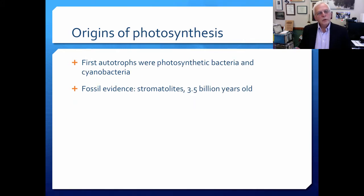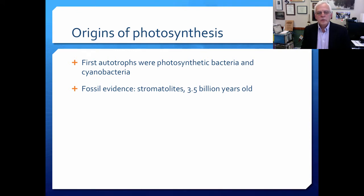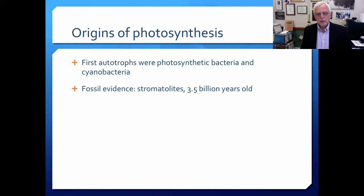Photosynthesis probably began to originate, and the first autotrophs were photosynthetic bacteria and cyanobacteria. There's fossil evidence going back a really long way — these are stromatolites. You find living stromatolites today, and these are big sorts of colonies of material that are very ancient indeed, going back about three and a half billion years in the history of Earth.